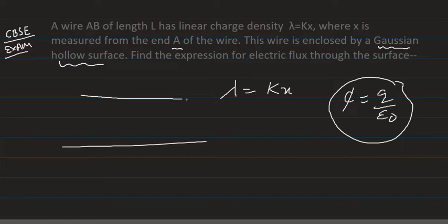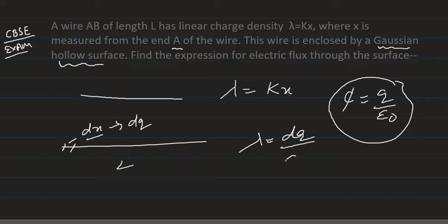Consider the wire of length capital L and let us take a small portion of the wire of length dx enclosing some charge dq. We know that lambda is equal to dq by dx — the linear charge density equals dq by dx. From this we get dq is equal to lambda dx.